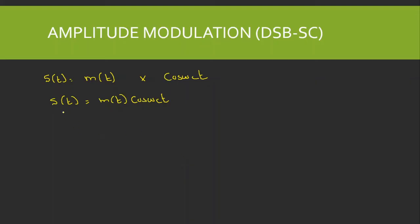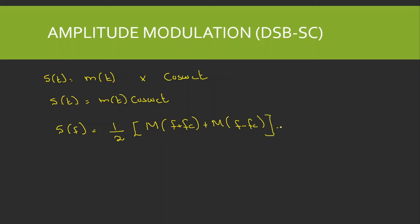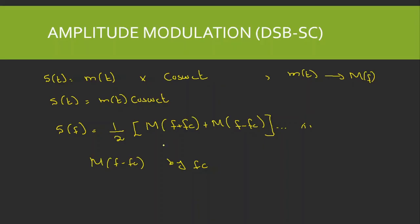Converting to the frequency domain using the frequency shifting property, the modulated signal s(t) = m(t)cos(ωct) becomes S(f) = ½[M(f + fc) + M(f − fc)]. The Fourier transform of m(t) is M(f), and this result shows that M(f − fc) is shifted to the right by fc and M(f + fc) is shifted to the left. Thus in modulation, the spectrum is shifted left and right by fc.